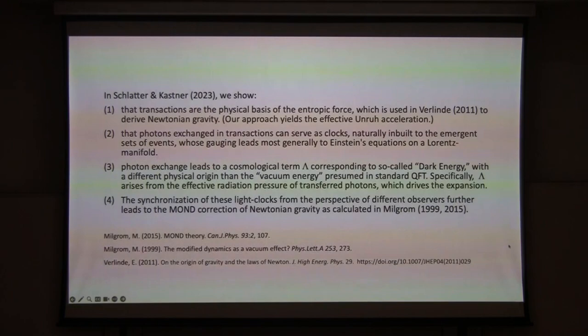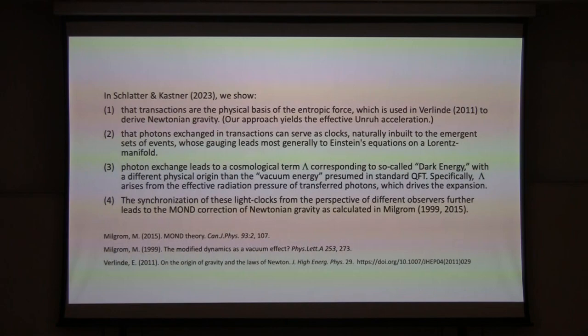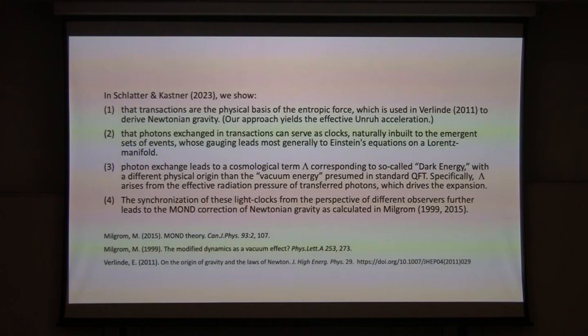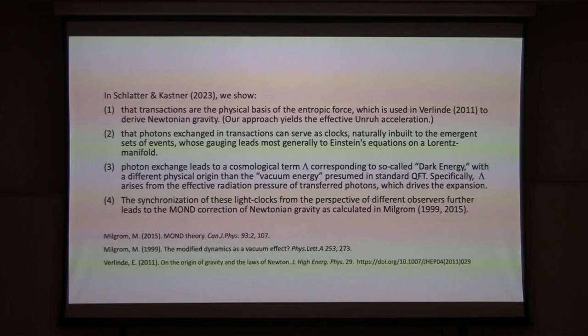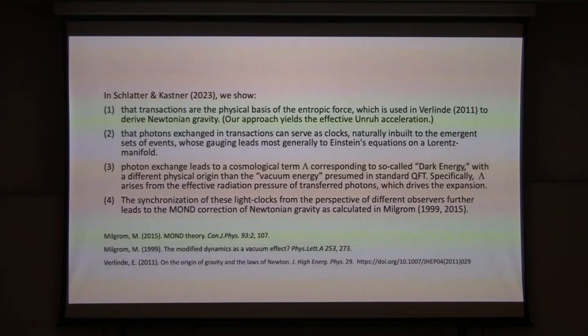In this paper, we show that transactions are the physical basis of the entropic force used in Verlinde 2011 and related papers to derive Newtonian gravity. Our approach yields the Unruh acceleration effect — we actually show how it comes out of physics rather than taking it for granted. The photons exchanged in transactions can serve as clocks naturally built into the emergent set of events, and the gauging of these clocks most generally leads to Einstein's equations on a Lorentz manifold. Photon exchange also leads to the cosmological lambda term corresponding to so-called dark energy.